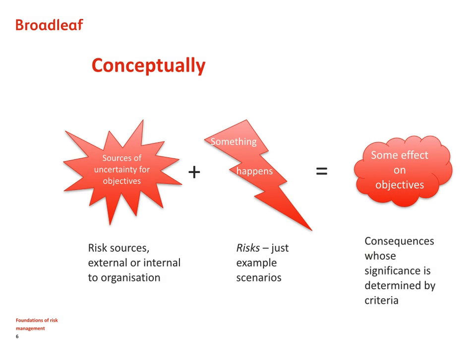From a conceptual perspective, to talk about risk we need to understand the sources of uncertainty — the sources of risk that give rise to risk, whether they're external or internal to our organisation. We then need to postulate some example scenarios of things that might happen that could lead to consequences which have some effect on our objectives.